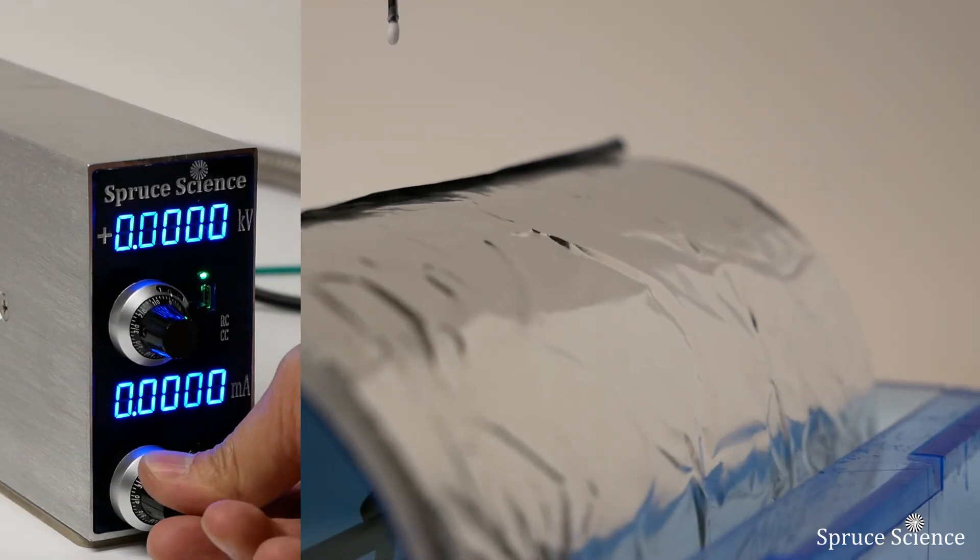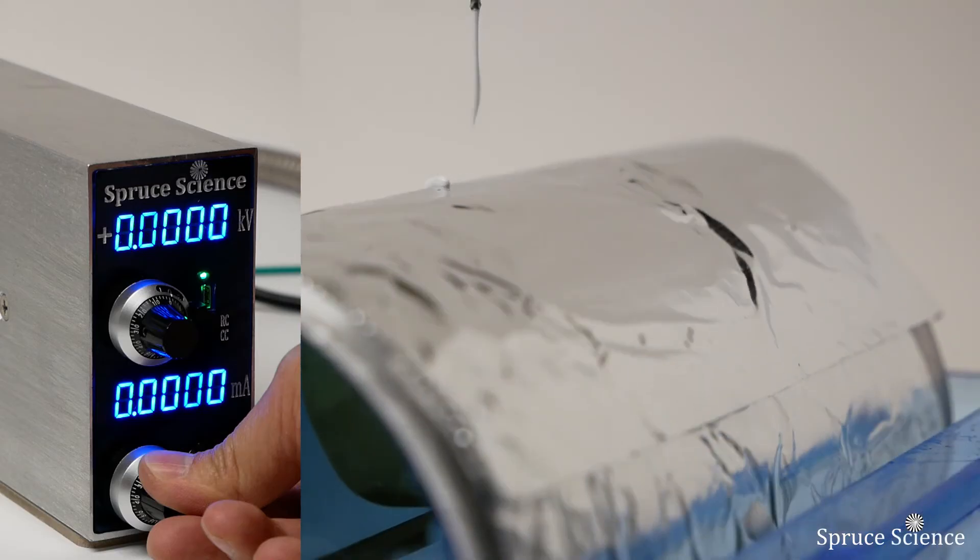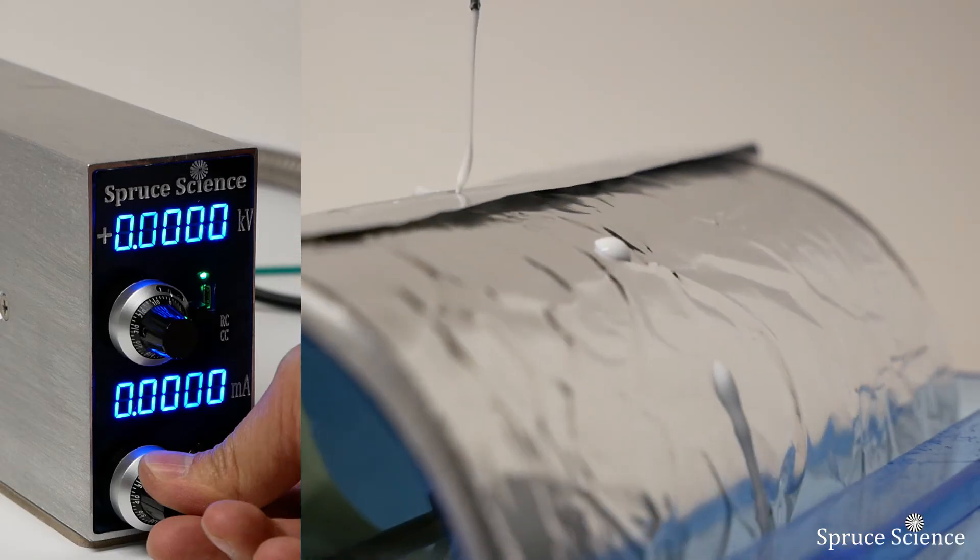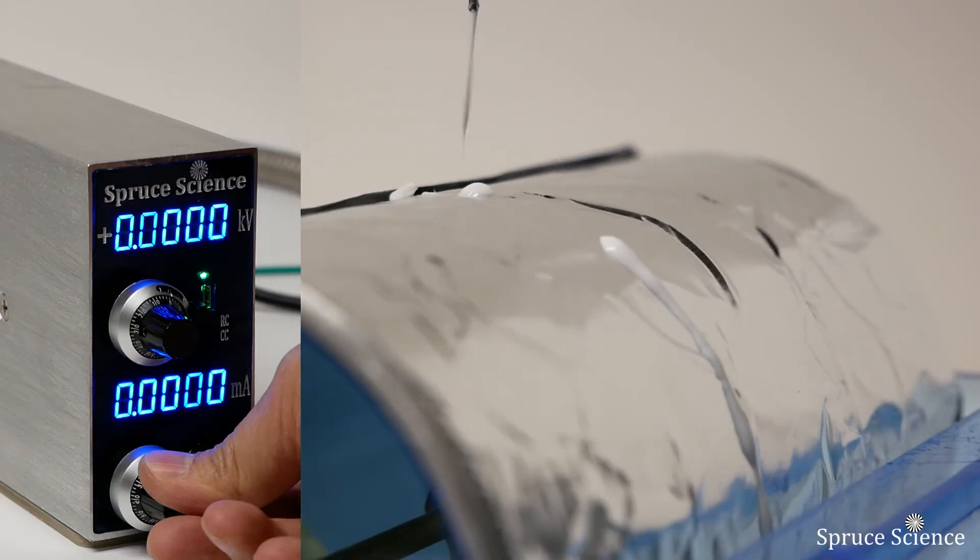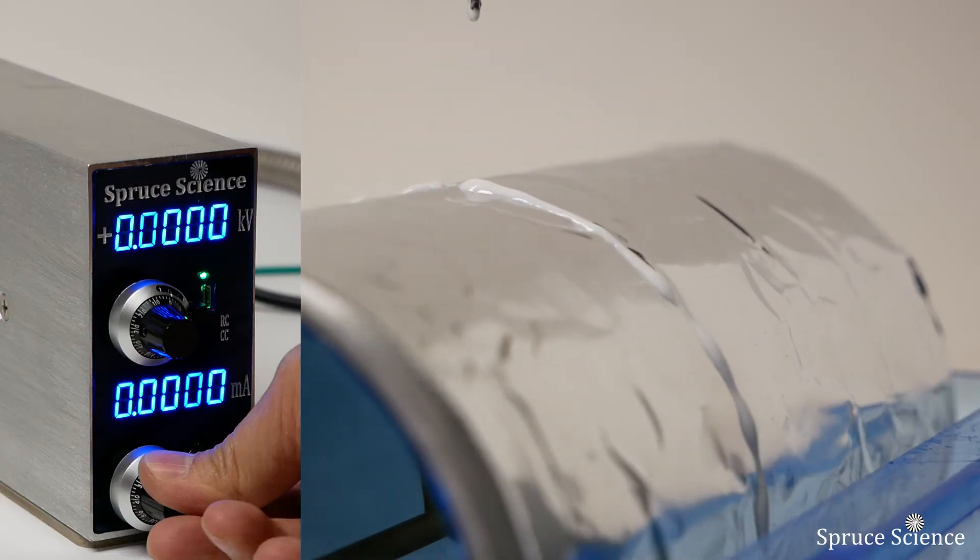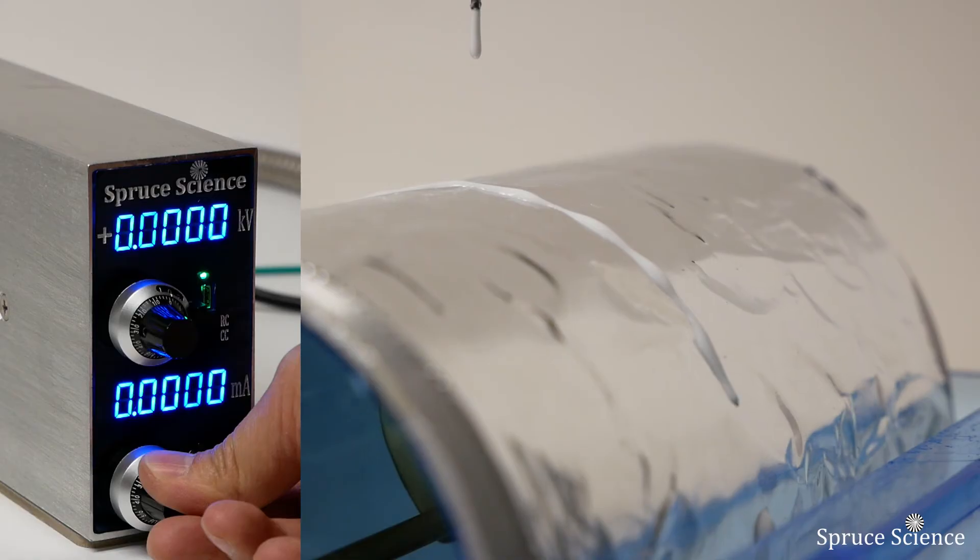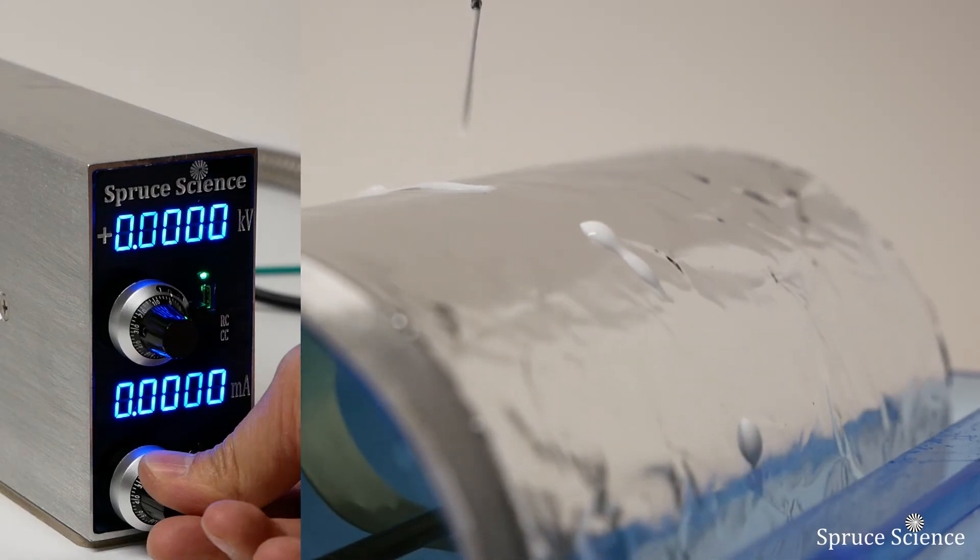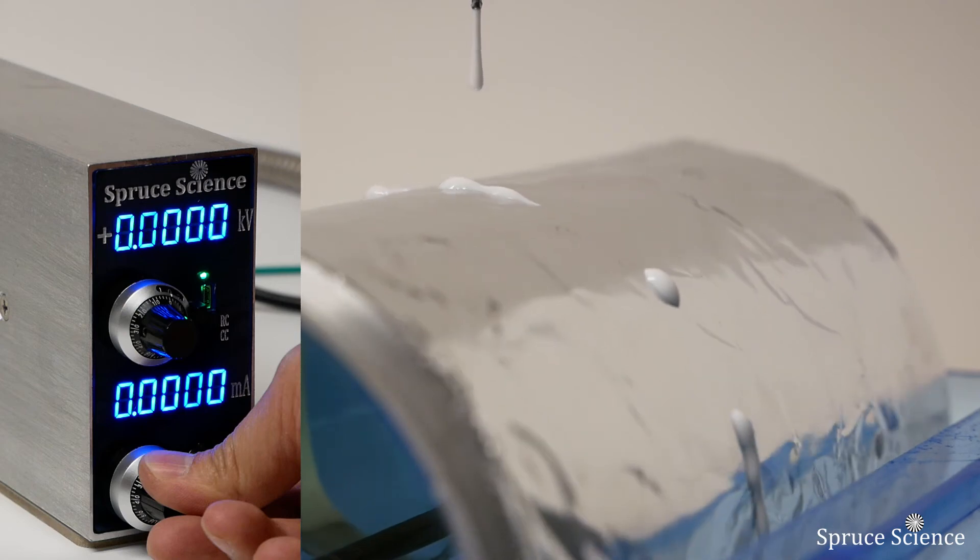On the high voltage power supply, adjust the current setting to the smallest output value that will work for your setup. In this particular demonstration, electrospinning did not require any current output, so the current limit was kept below 0.1 milliamp. This will limit the current output in case there is a short.